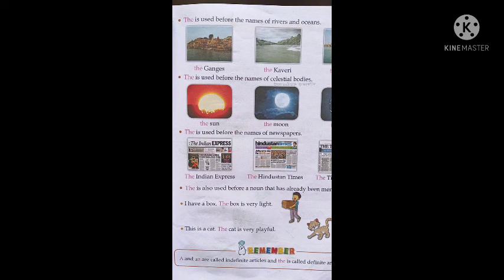'The' is also used before a noun that has already been mentioned before. For example: We have a box — the box is very light. Another example: This is a cat — the cat is very playful. So when a noun is mentioned again, we use 'the' before it.